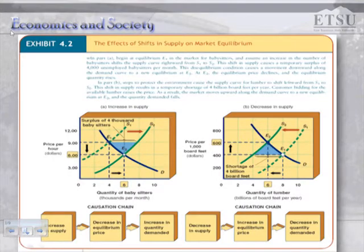Let's look at changes in supply. An increase in supply is illustrated by a shift of the supply curve to the right. Looking at panel A, if the equilibrium price is $9 and the equilibrium quantity is initially 4,000, what happens when supply increases? The supply increase results in downward pressure on the equilibrium price, which leads to an increase in quantity demanded, so that the new equilibrium has a lower price and a greater quantity exchanged in the market.